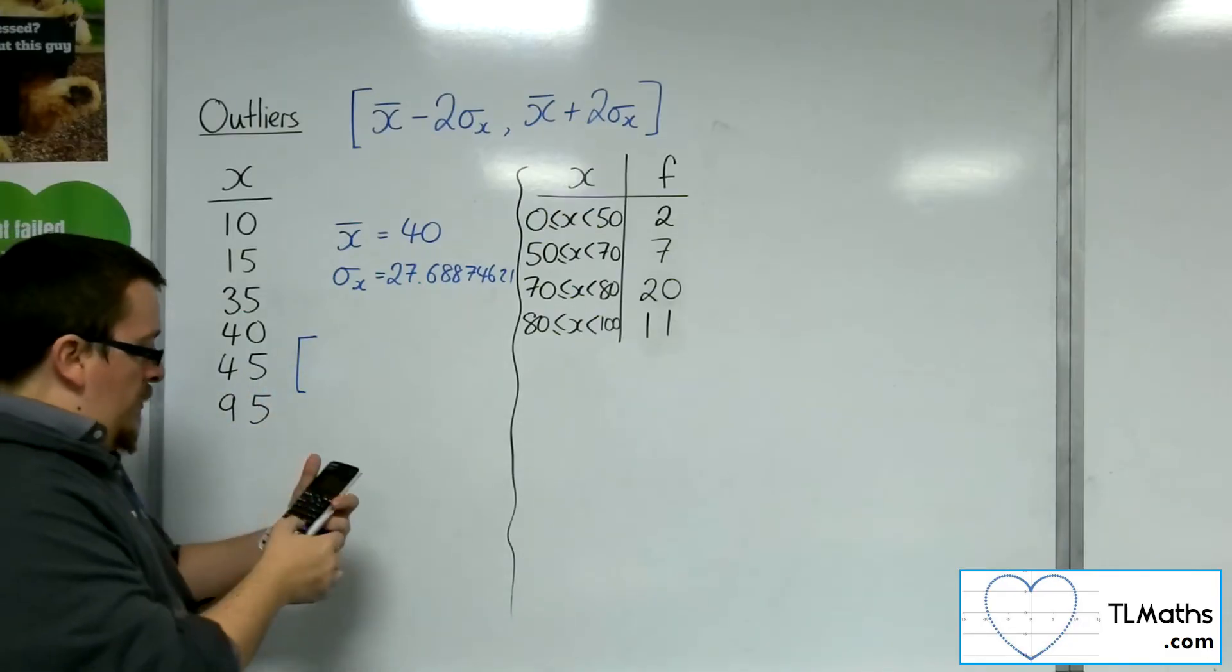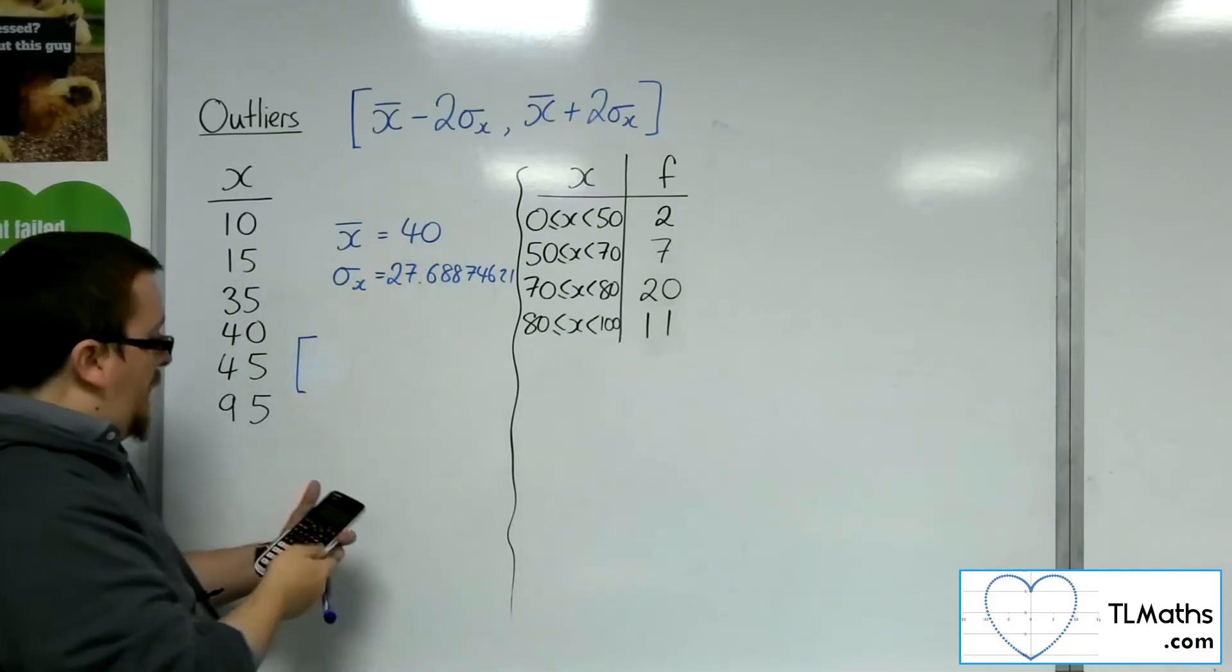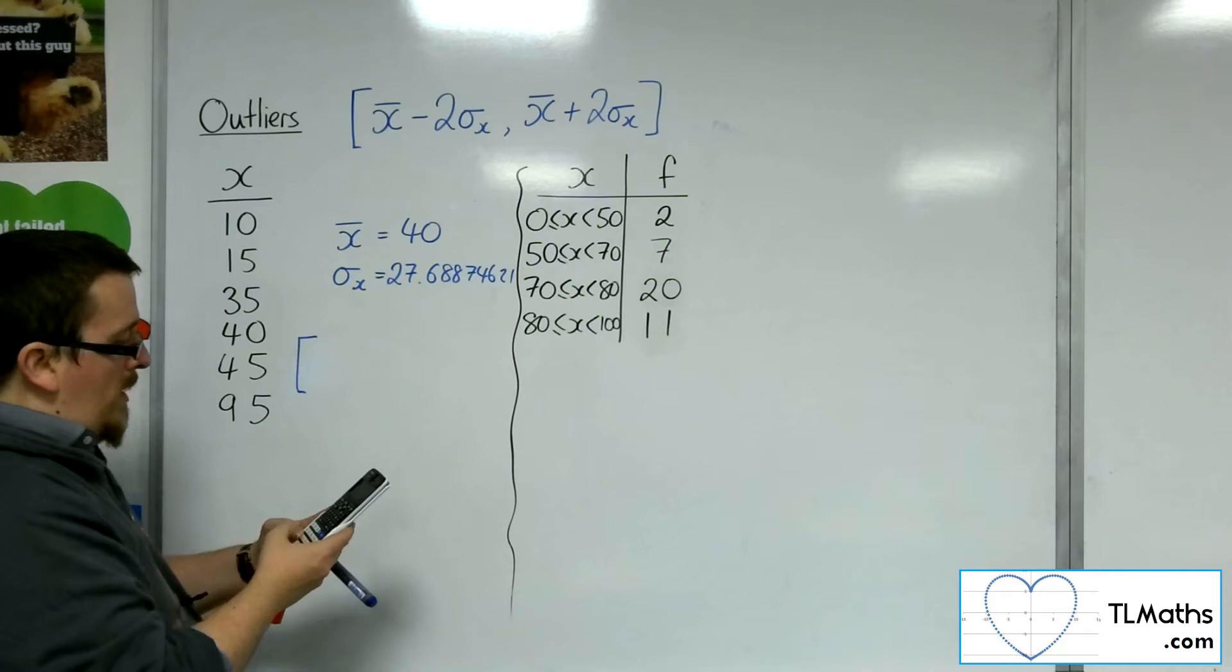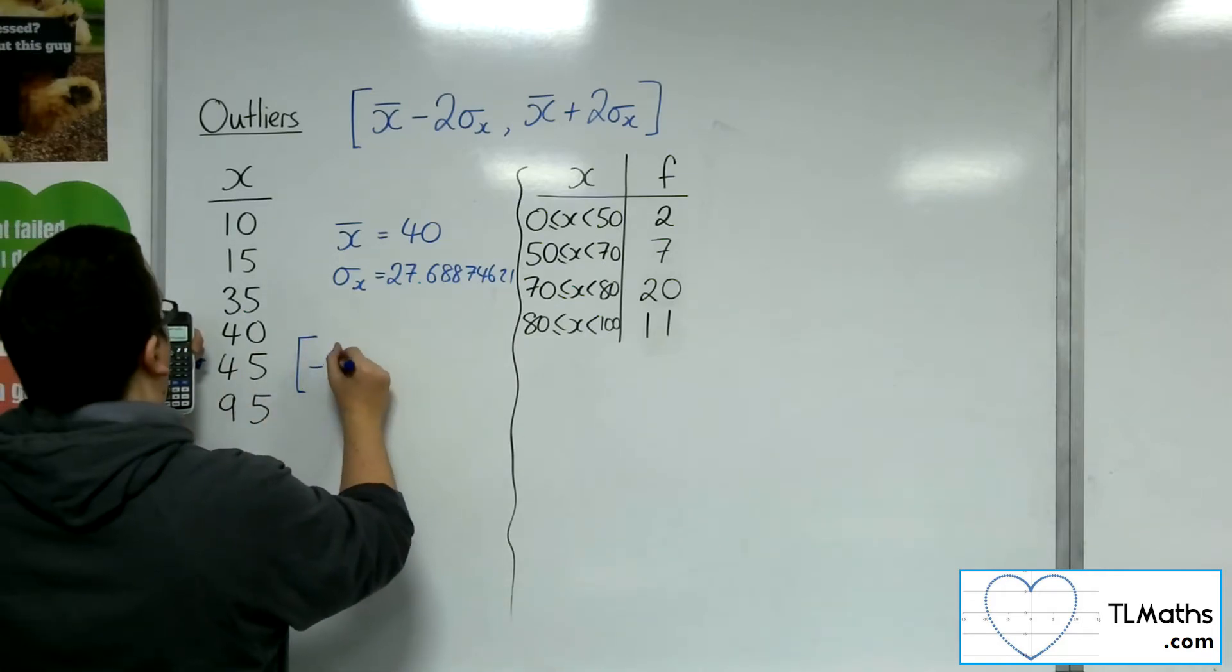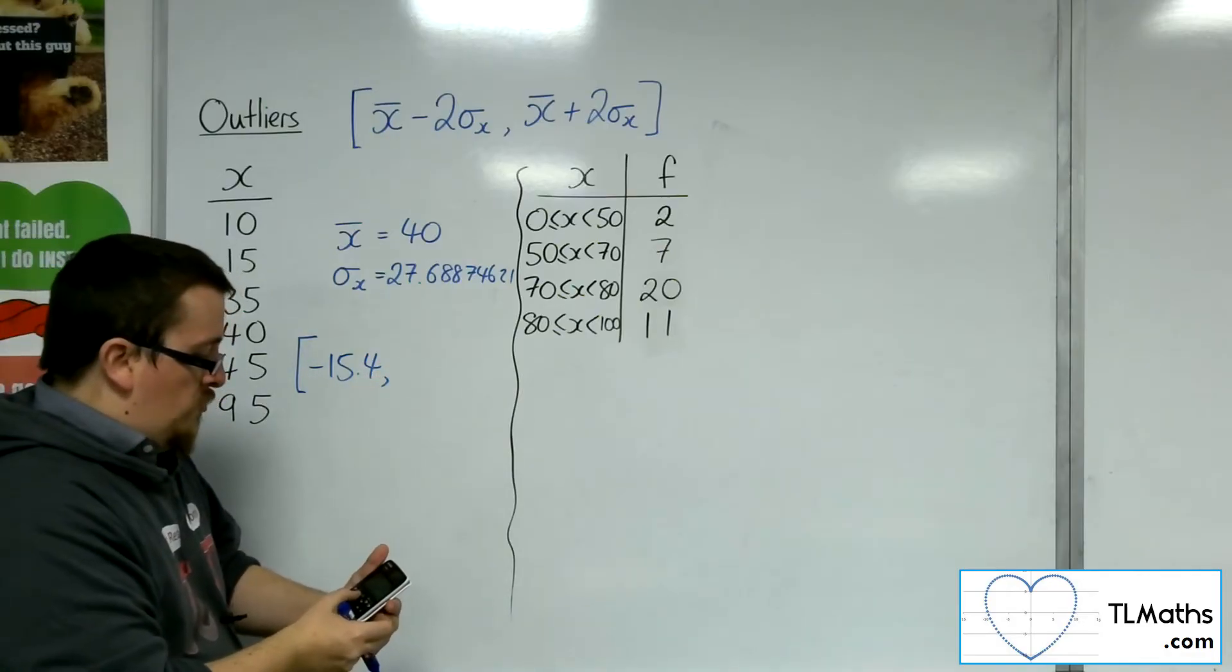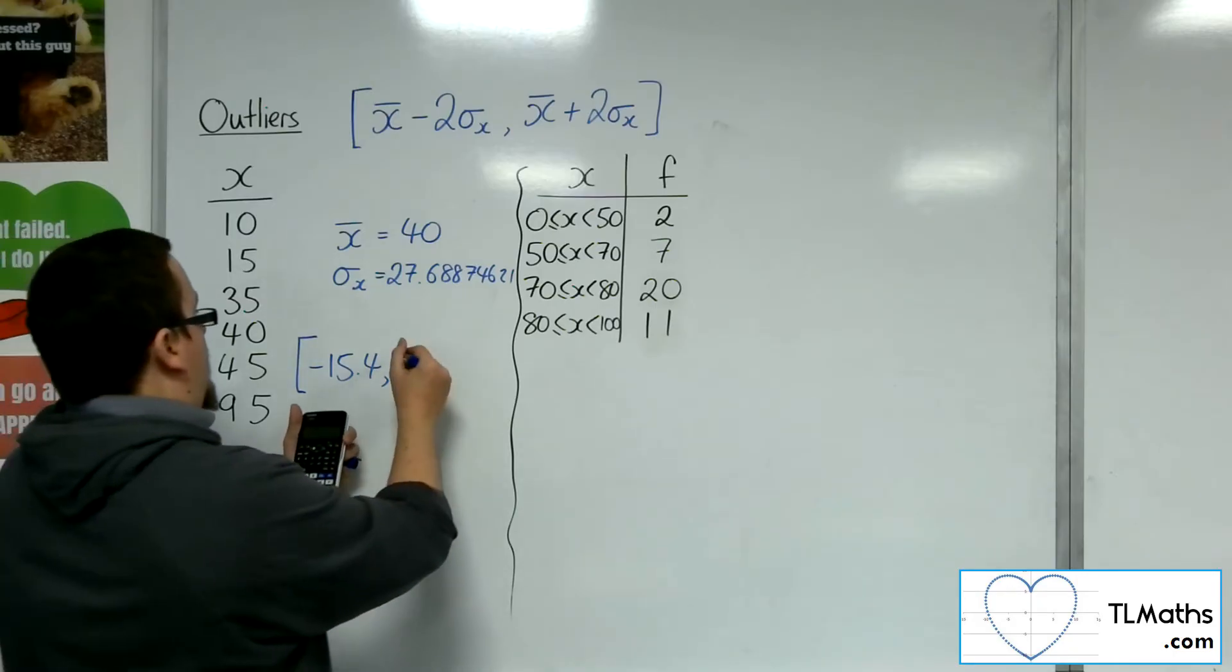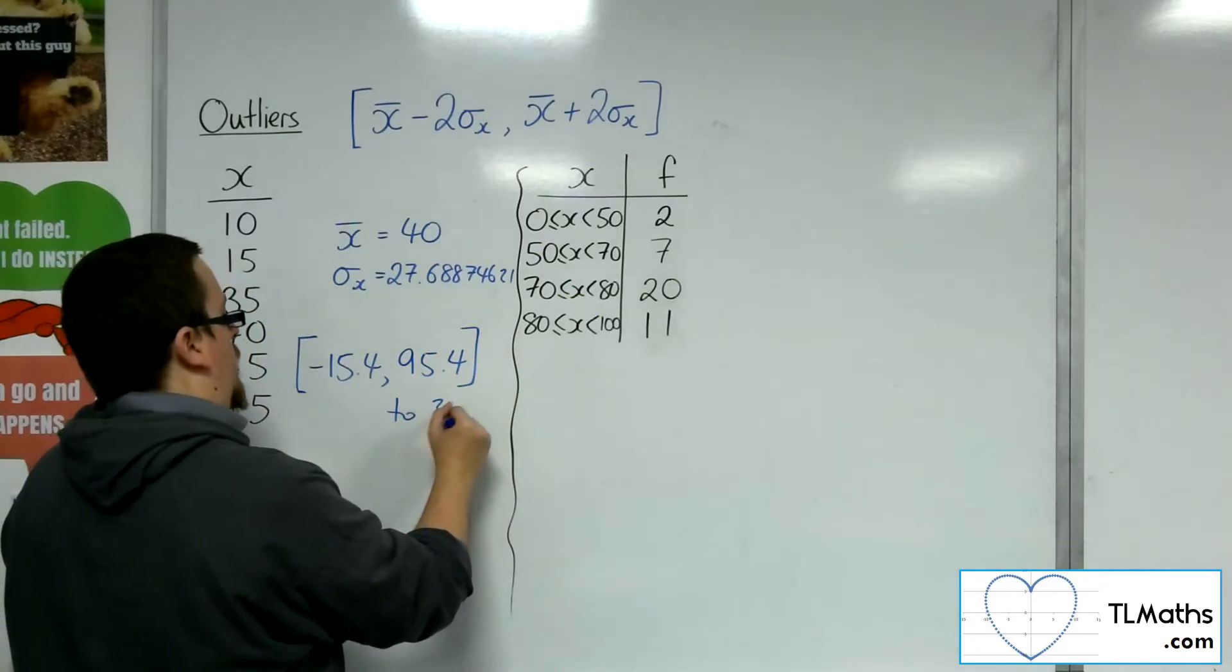So then what I want to do is I'm going to go back to the main computation bit on your calculator, and then I'm going to do 40 take away two lots of 27.68874621. So that gets me minus 15.4 to 3 sig fig. And then I can just scroll back, turn it into a plus between the 40 and the 2 times, and I get 95.4 to 3 sig fig there.